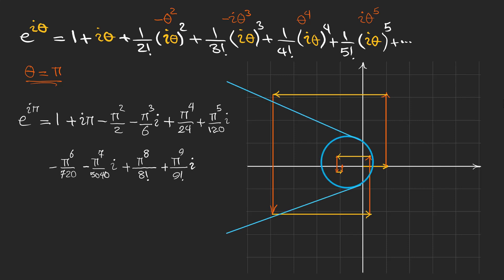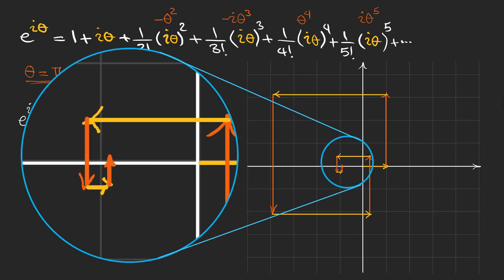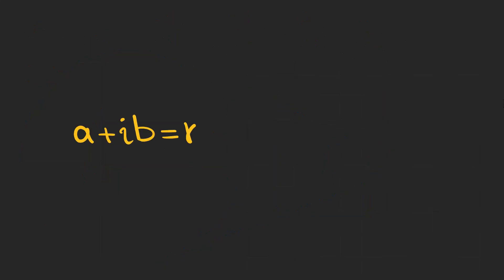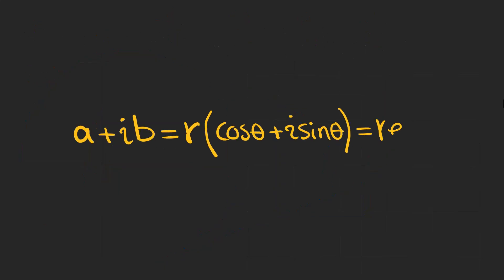Taking a closer look, we can see we are reaching minus one. The partial sum lands at approximately minus 0.976 plus 0.0069i, which is a very good estimation of minus one. So a complex number can be written in rectangular or polar form, and the amazing connection is that trigonometric functions are related to exponential functions.